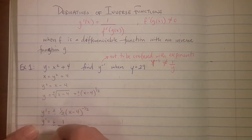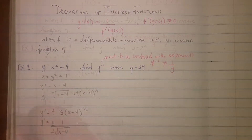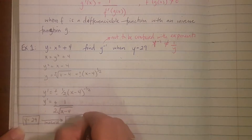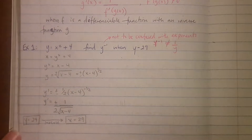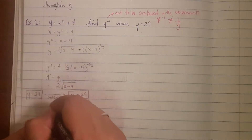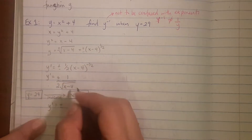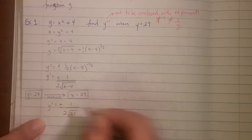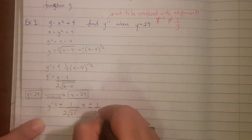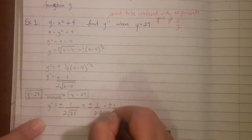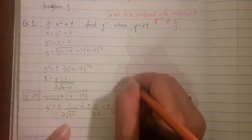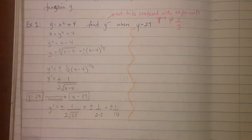Rewriting that gives 1 over 2 times the square root of x minus 4. Now I need to plug y in. When y equals 29 in the original function, x equals 29, so you make x equal to 29 and solve. The derivative of the inverse function is going to be plus or minus 1 over 10. That's the long way.